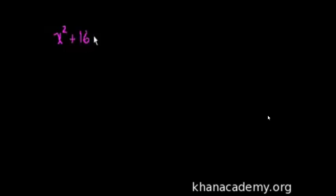Welcome to the video on completing the square. What's completing the square? Well, it's a way to solve a quadratic equation. Let me just write down a quadratic equation and then I will show you how to complete the square, and then we'll do another example. So let's say I have this equation: x squared plus 16x minus 57 is equal to 0.